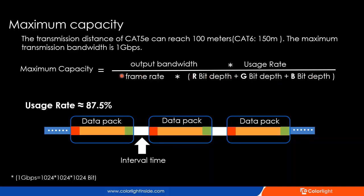Currently, the control system is based on network communication. Network cable transmission has these advantages: stable, long distance, and high-speed transmission. The transmission distance of Cat5e can reach 100 metres. The maximum transmission speed is 1 gigabyte. There is a formula to calculate the maximum loading capacity. The maximum bandwidth of an Ethernet cable is fixed at 1 gigabyte.